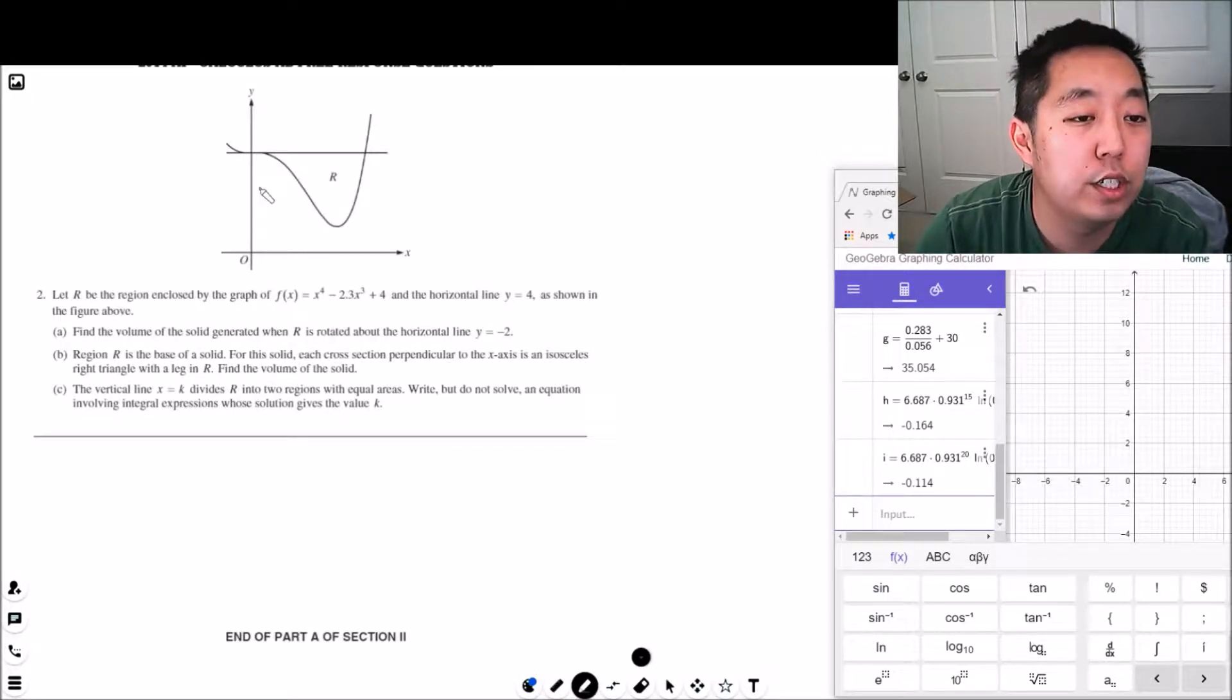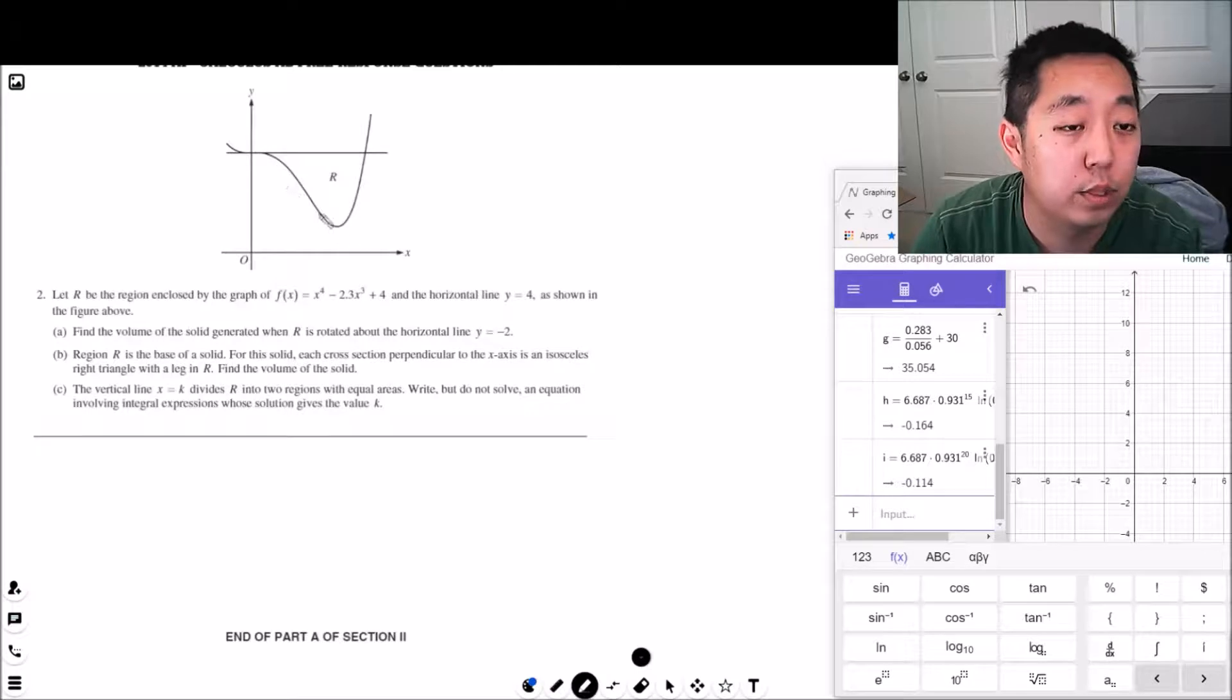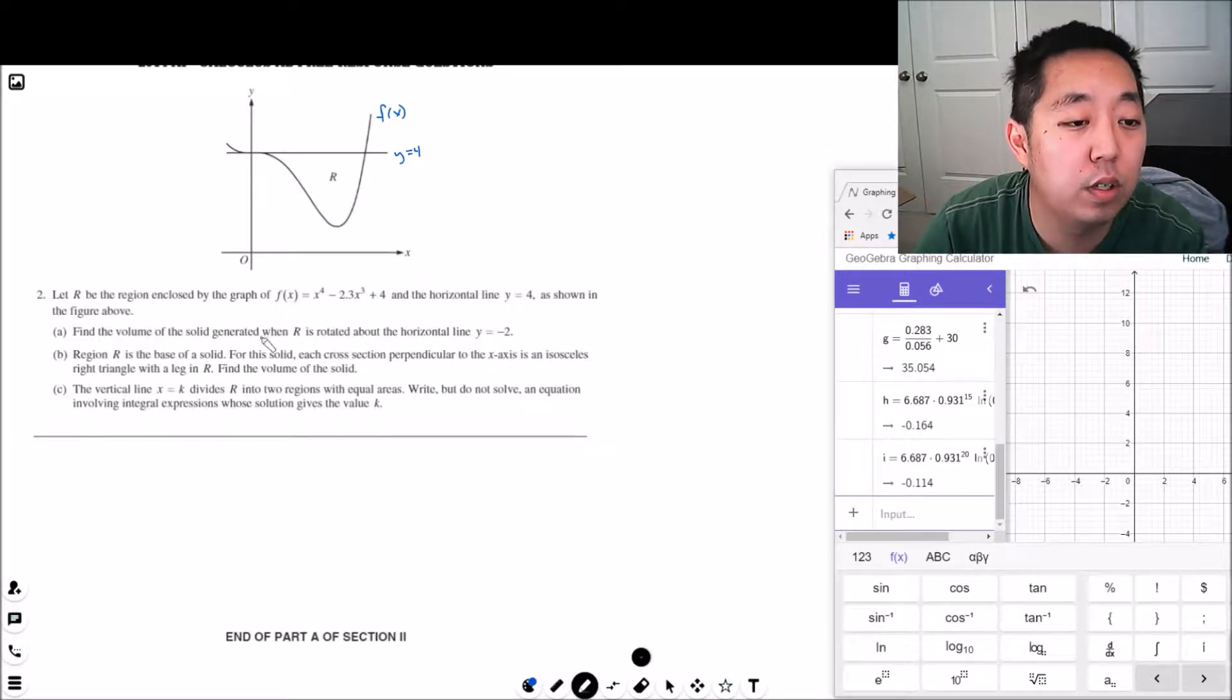So let R be the region, we're still in the graphing calculator portion, so let R be the region enclosed by the graph, by this graph, so this is f of x here. And the horizontal line y equals 4, this is y equals 4. Find the volume of the solid generator when R is rotated about the horizontal line y equals negative 2. So this line.